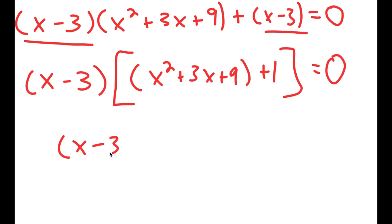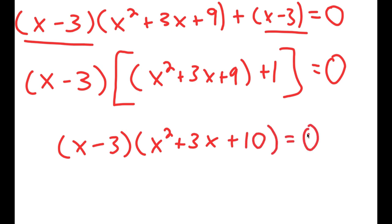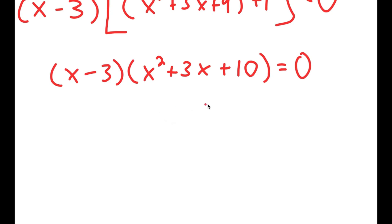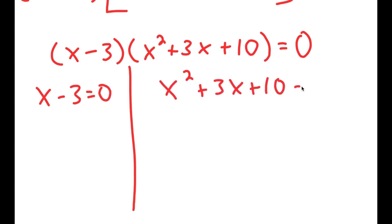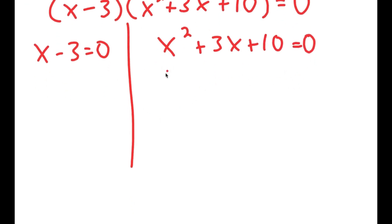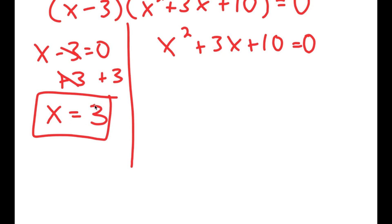This is equal to x minus 3 times x squared plus 3x plus 10 is equal to 0. Now I have two equations from this: x minus 3 is equal to 0, and x squared plus 3x plus 10 is equal to 0. For x minus 3 equals 0, this is fairly simple — all I have to do is add 3 on both sides, and I get x is equal to 3. So this is one solution. Now for x squared plus 3x plus 10 is equal to 0, this is a quadratic equation, meaning I can use the quadratic formula to solve this.